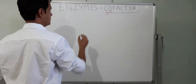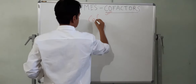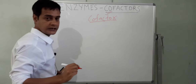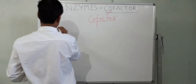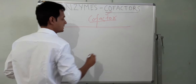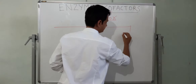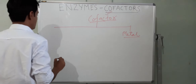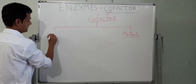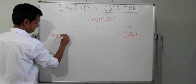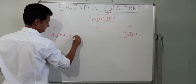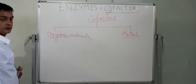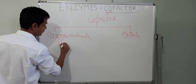Cofactors can be of two types: they can be a metal, or they can be an organic molecule. If the cofactor is an organic molecule, it is known as a coenzyme.